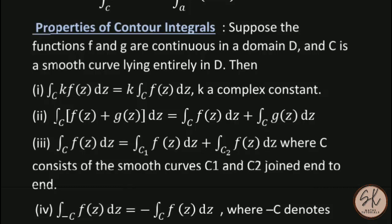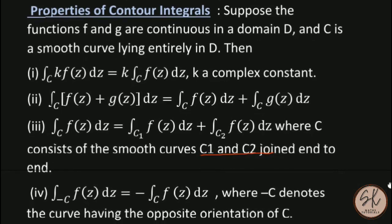The first property is: if k is a complex constant, then it comes outside the integration. The second property is: the integration of the sum of two functions equals the integration of each function separately. The third property is: if C consists of smooth curves C1 and C2 joined end to end, then the integration along C equals the sum of the integrations along C1 and C2. And property four: the integral along minus C, where minus C denotes the curve having the opposite orientation of C.